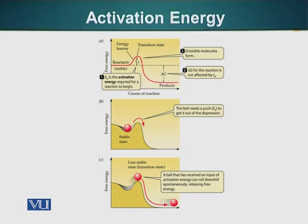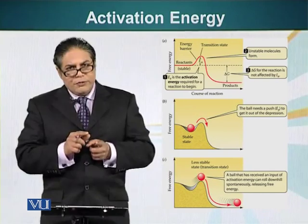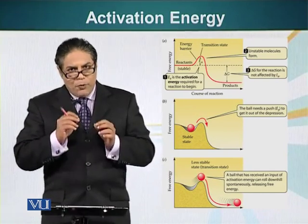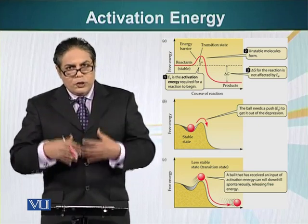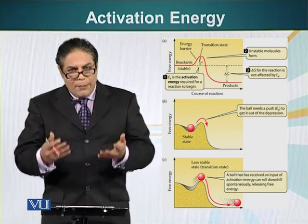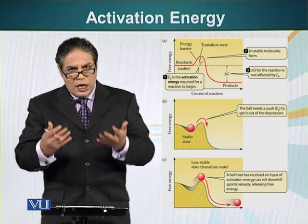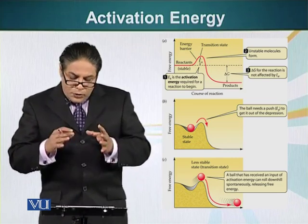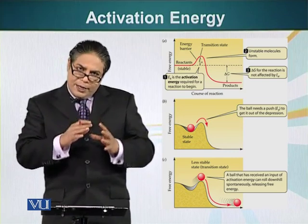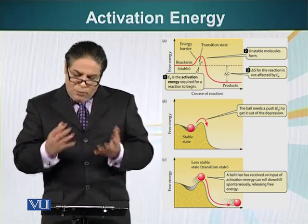In order for reactants to reach the higher energy level of the transition state, they require a little energy — that is the activation energy. For example, combustion of methane is a very exothermic reaction that releases a lot of energy. But as you have seen when you turn on your stove, you have to provide some energy — you have to light a match in order to start the combustion process. Different chemical reactions have different amounts of activation energy requirements.